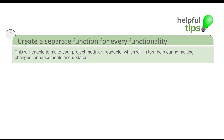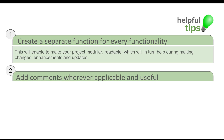You should always create a separate method for every separate functionality. Whenever you see a separate action, you should have a separate function for that. It will make your code very readable and modular, and it will help you make changes and enhancements because it is very simple to do that when your code is in separate functions.